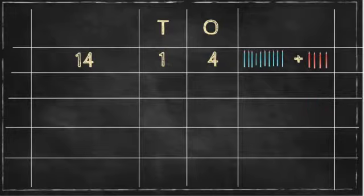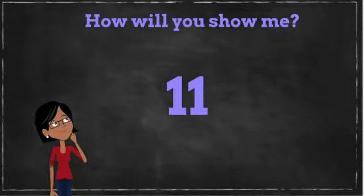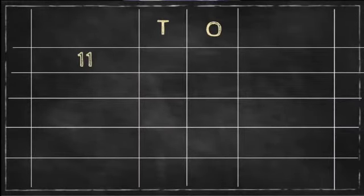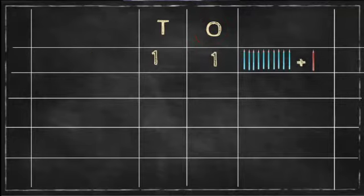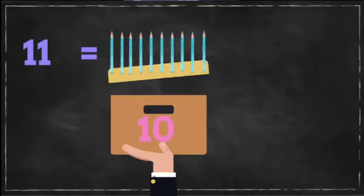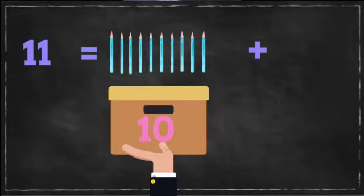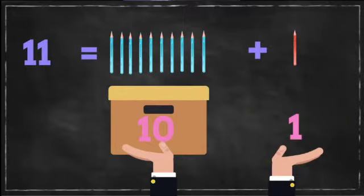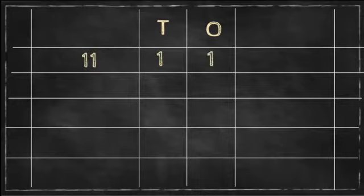Now if I ask you to show me number 11, how will you show me that number? 11 means that I am writing number 1 under T and number 1 under O. So what will I do children? I have 1 under T so I will pick up one box of pencils in one hand, and in the other hand I will pick up one more pencil. So 1 and 1 will make 11.